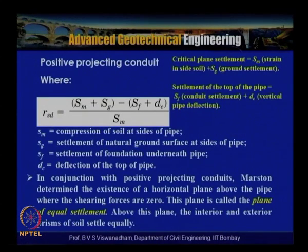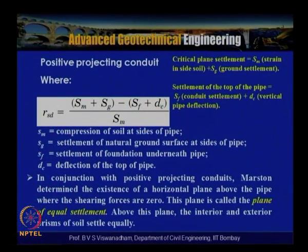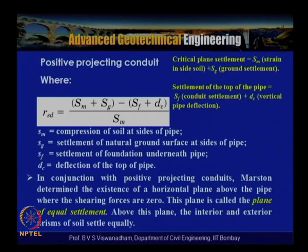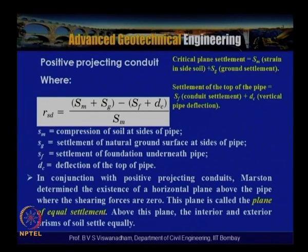The settlement ratio is defined as (SM + SG − SF − DC) / SM. For flexible pipes the settlement ratio is negative because SF + DC > SM + SG. The critical plane of settlement settles by SM + SG (side soil compression plus ground settlement), while the top of the pipe settles by SF + DC (foundation settlement plus vertical pipe deflection).